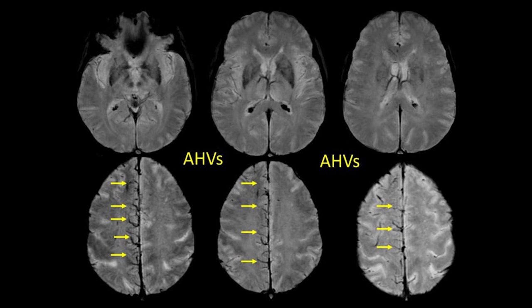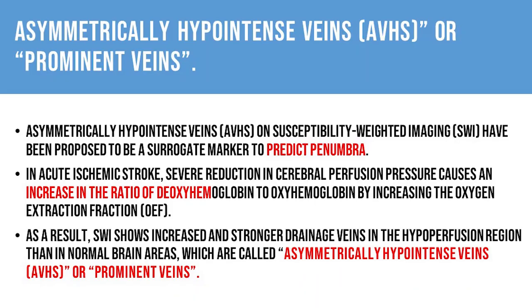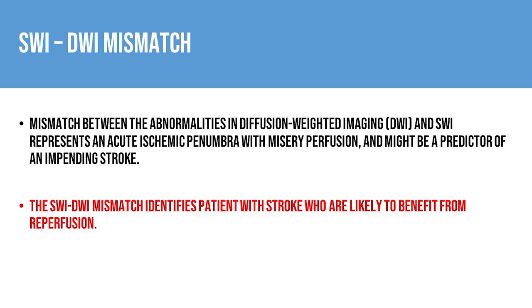You can see numerous asymmetric hypointense veins draining into the superior sagittal sinus. The take-home messages from our case are: asymmetric hypointense veins are surrogate markers to predict the penumbra — always look for them in the presence or absence of diffusion restriction. Mismatch between diffusion weighted imaging and susceptibility weighted imaging abnormalities represents an acute ischemic penumbra with misery perfusion.